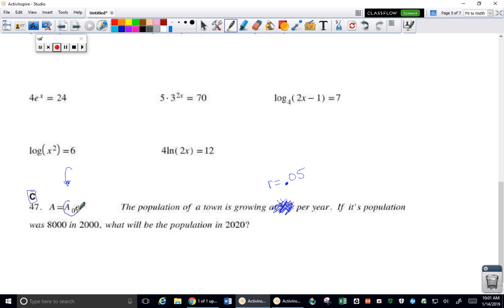If its population was 8,000 people, that's your A₀, your initial population. In 2000, that's the year we start at, what will the population be in 2020?